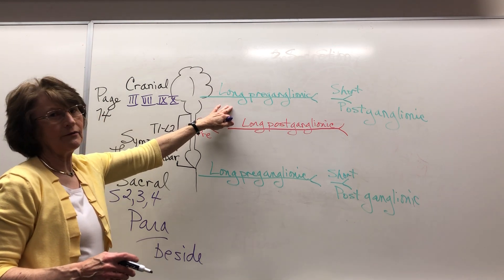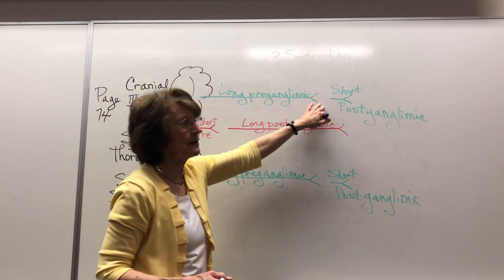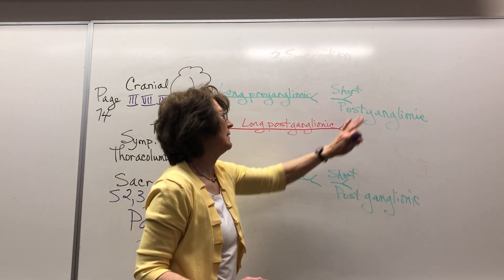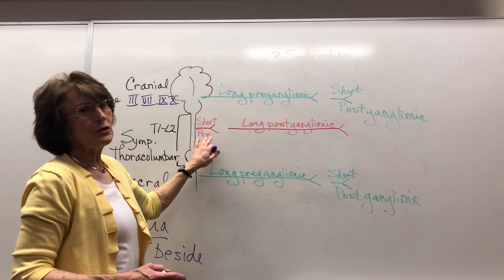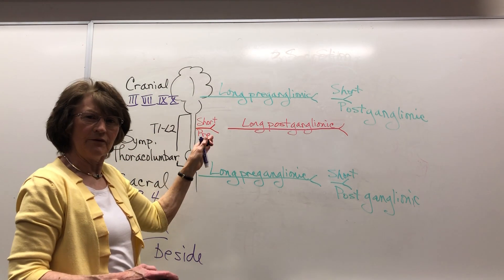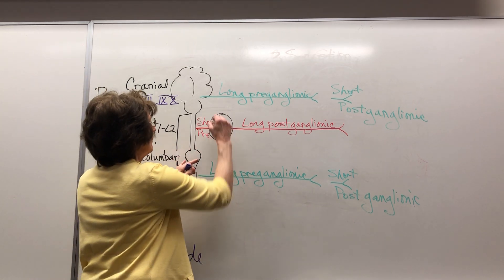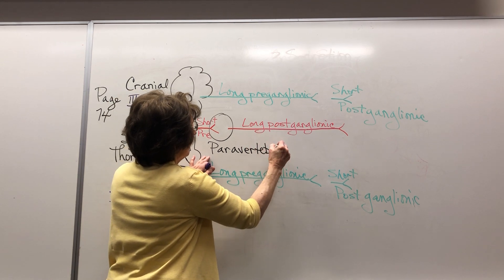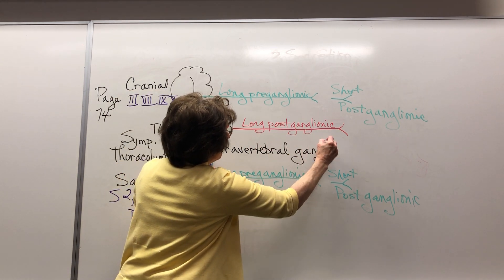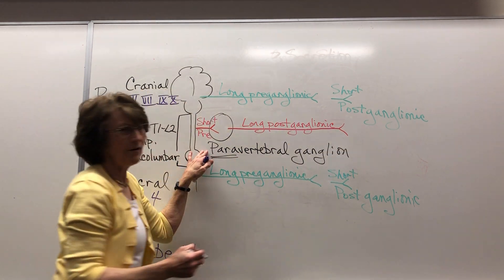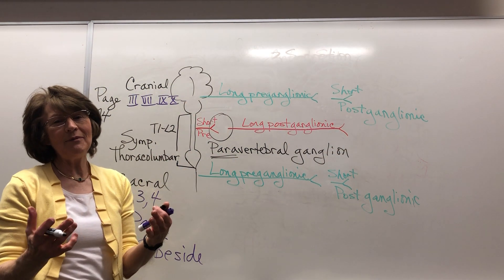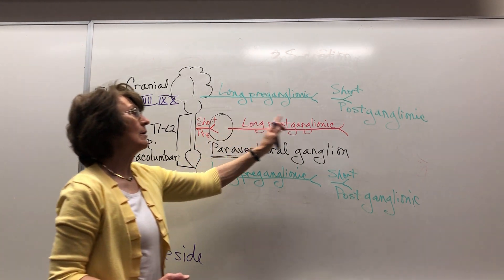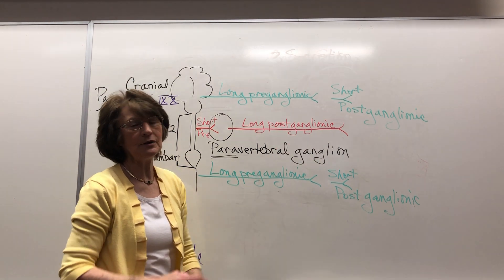There are long preganglionic fibers — you can see them in the textbook going right out to the organ, whether it's the heart or the stomach. Then there's a very short postganglionic. For the sympathetic, it's a short preganglionic going right out beside the vertebrae. That ganglion is called the paravertebral ganglion — para meaning beside, so it's beside the vertebrae. Then there's a long postganglionic fiber going out to the heart or the stomach.